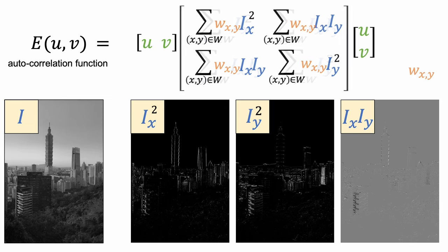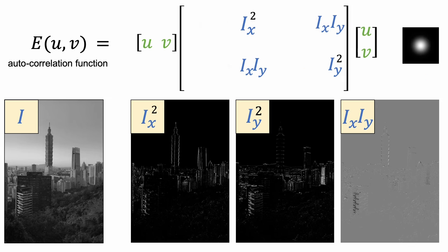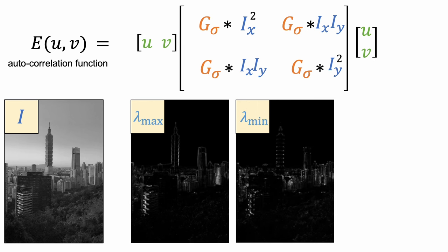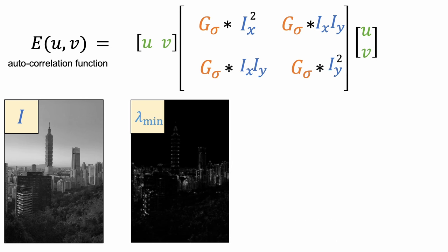Instead of using a constant weight, in practice we put a higher weight at the center. This can be implemented by a Gaussian filter. With all these values at every pixel, we can compute the largest and smallest eigenvalues of the second moment matrix. We are particularly interested in the smallest eigenvalues.